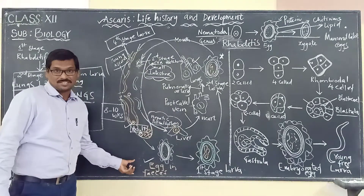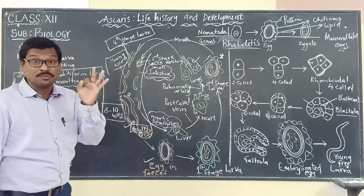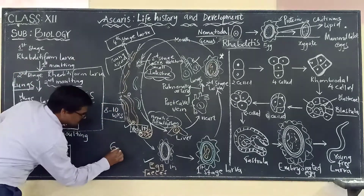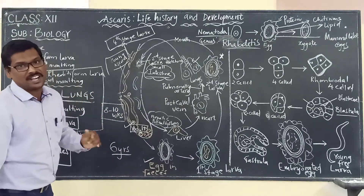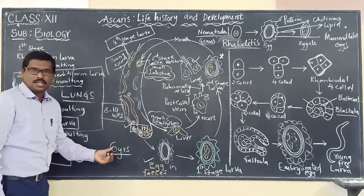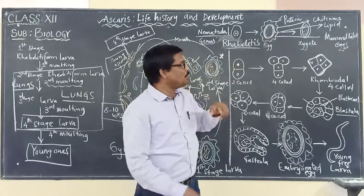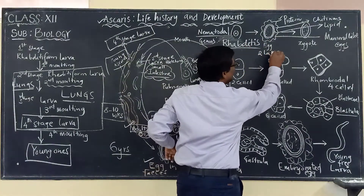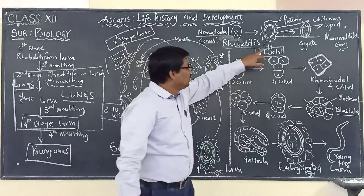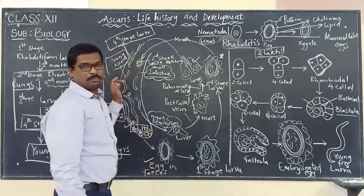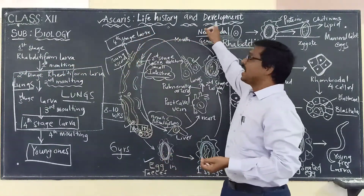One important point: once the eggs are released in the feces, they can survive in the soil under favourable conditions. Also note that the female roundworm can lay about two lakh (200,000) eggs.